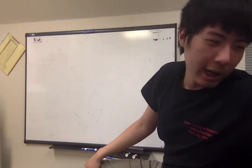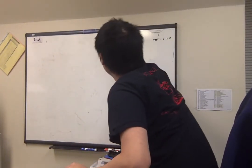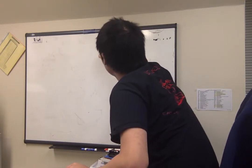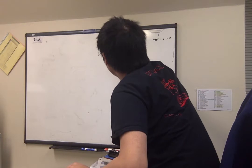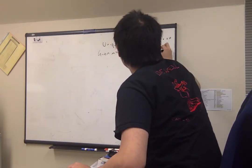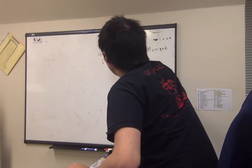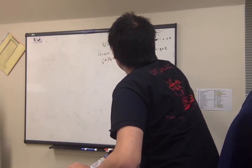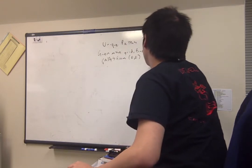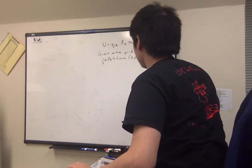OK guys, let's do unique paths. So given an m by n grid, find the number of unique paths from 0,0 to m,n, or m minus 1, n minus 1 to be more precise in Python.